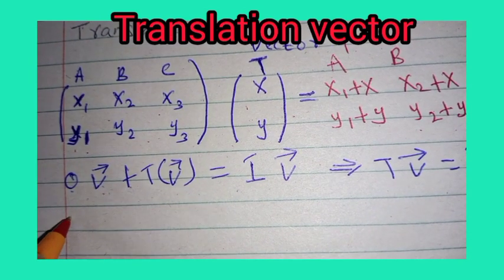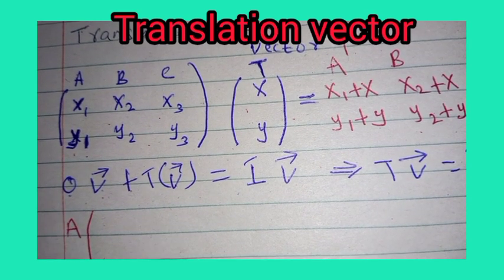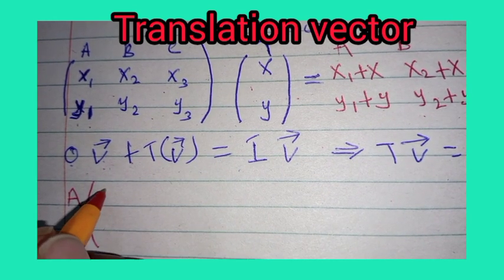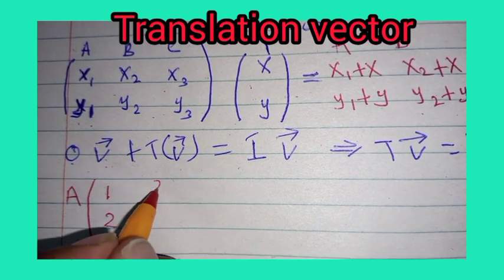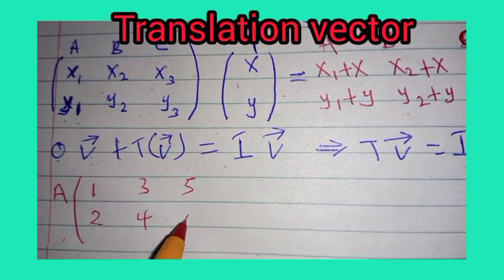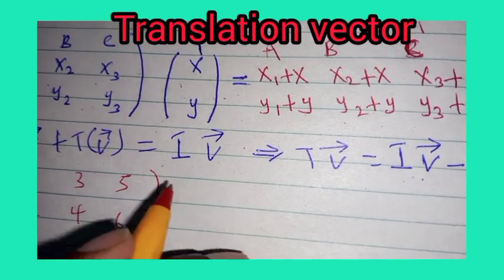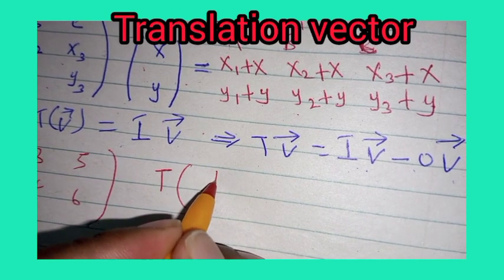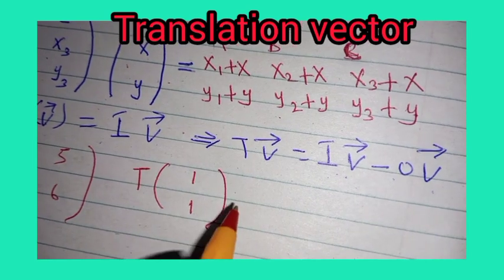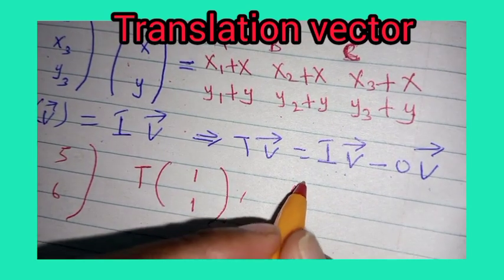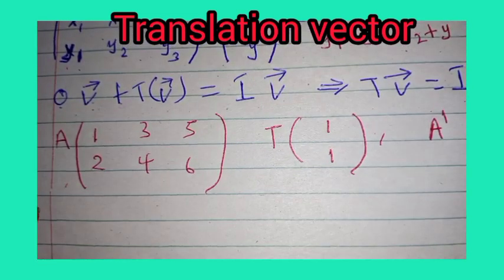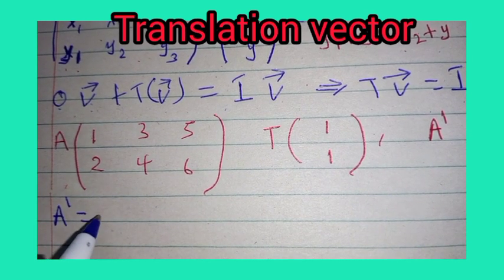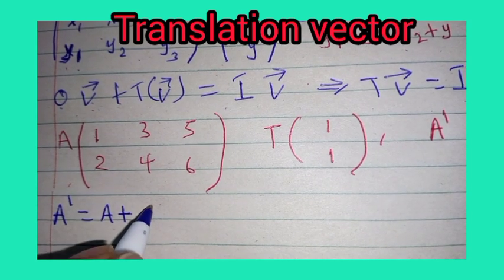Example: we are given an object whose elements are as follows. We have a matrix A with elements 1, 2, 3, 4, 5, 6. And we are given a translation vector T with values 1, 1. The question is to find the image of matrix A. To get the image of matrix A, we use: image of A equals A plus translation vector T.